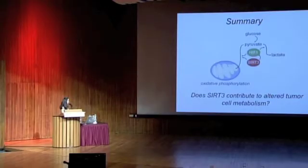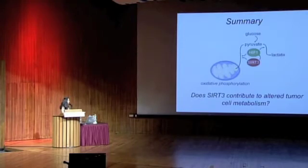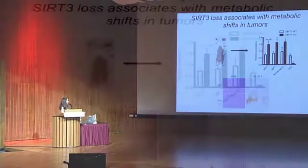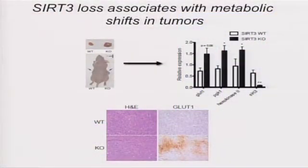The big question we wanted to ask next was whether this pathway — whether SIRT3 — has anything to do with tumor cell metabolism. Previously, David Geis' lab showed that SIRT3 knockout cells grow larger tumors in xenografts. We repeated this result and further analyzed these tumors for differences in glycolytic gene expression to see if SIRT3 knockout tumors had an altered metabolism. We did see increased glycolytic gene expression and increased GLUT1 IHC staining.